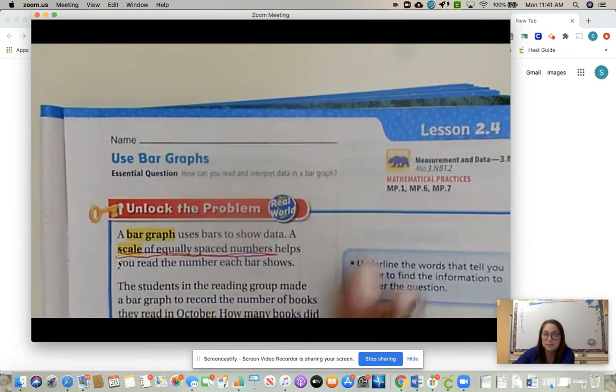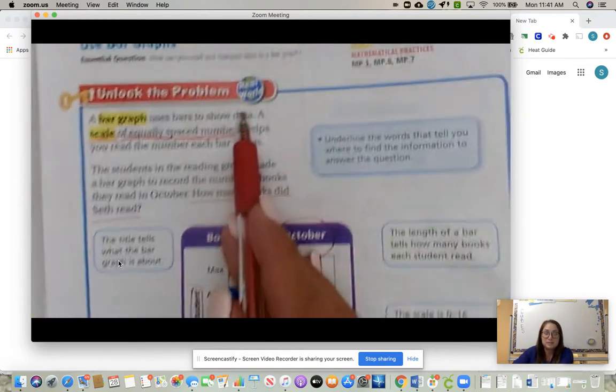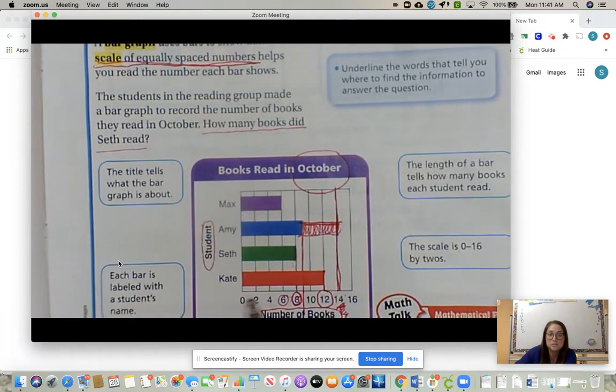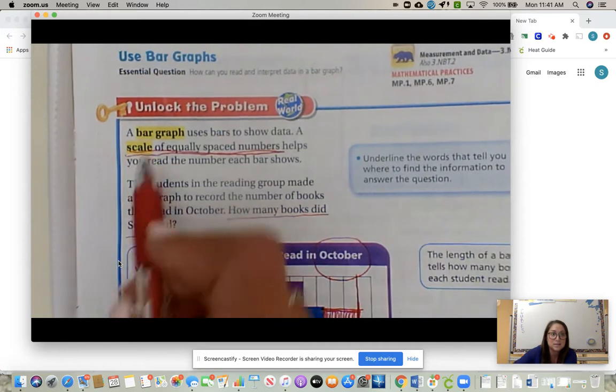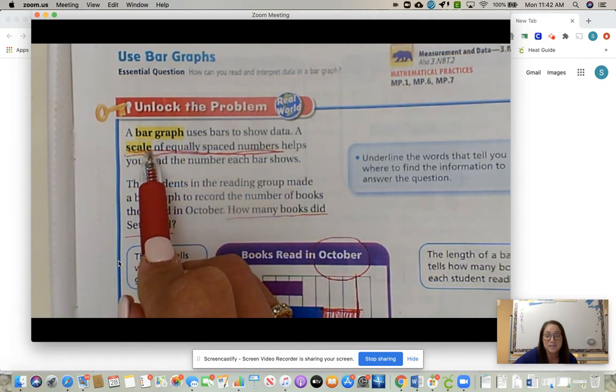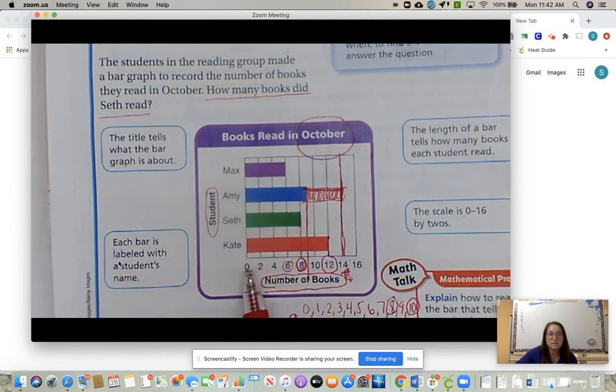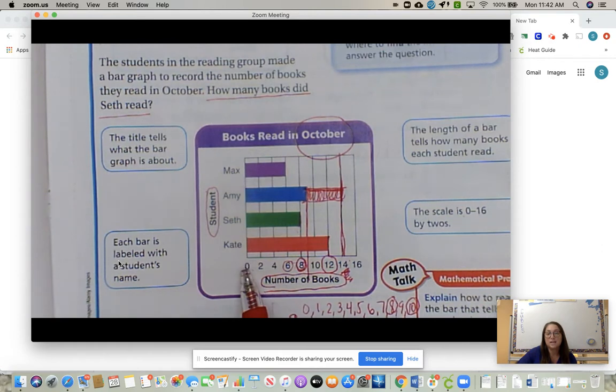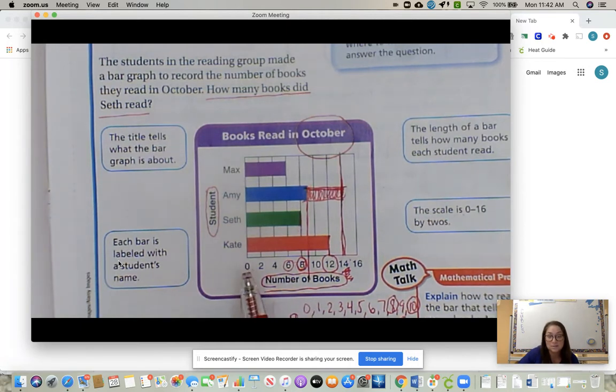On page 77, use bar graphs, lesson 2.4. A bar graph uses bars to show data. What I told the students is that data is just numbers. A bar graph, just like all the other charts we've learned, shows data or numbers. A scale of equally spaced numbers - I want to stop right there. A scale is just how you read the bar graph as far as numbers. Another word for scale is skip counting. What are they skip counting by? Or you can also say, what is the scale? That's our vocabulary we want to use.